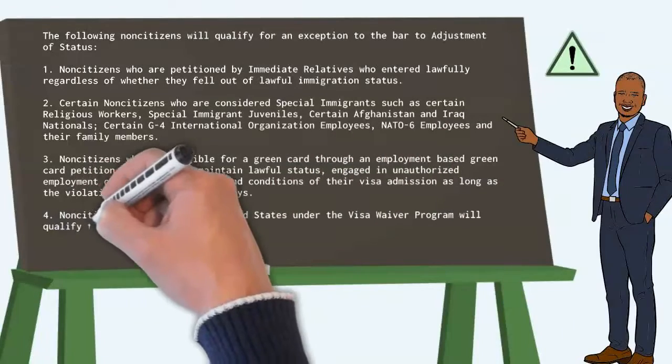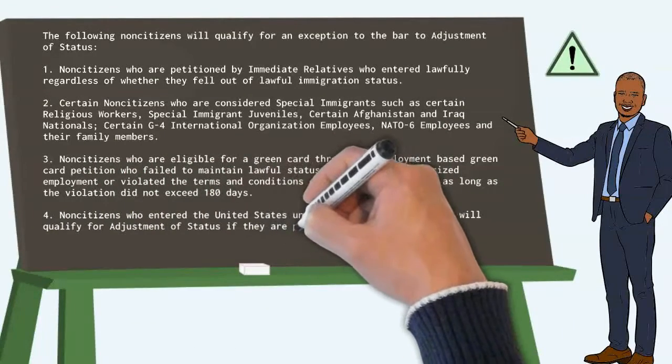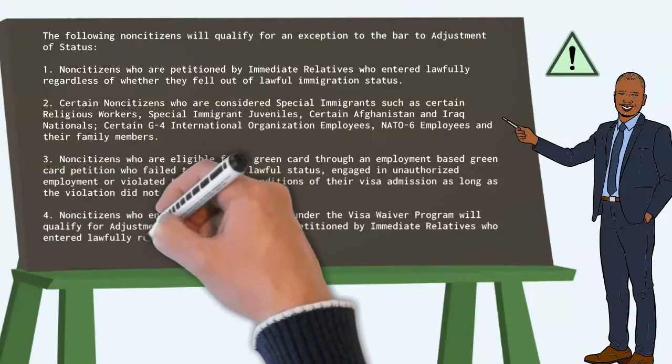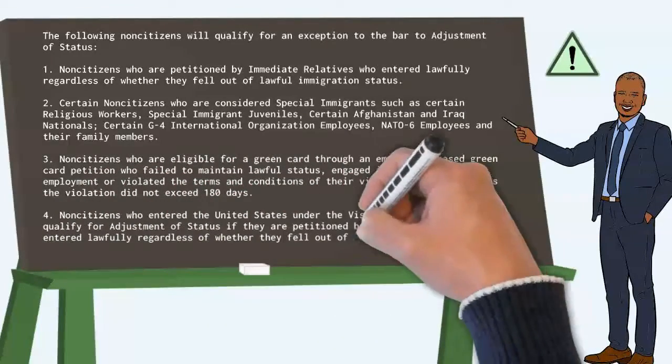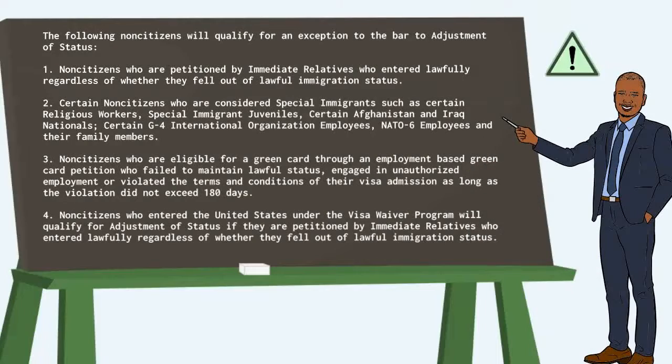Four: Non-citizens who enter the United States under the Visa Waiver Program will qualify for adjustment of status if they are petitioned by immediate relatives who entered lawfully regardless of whether they fell out of lawful immigration status.